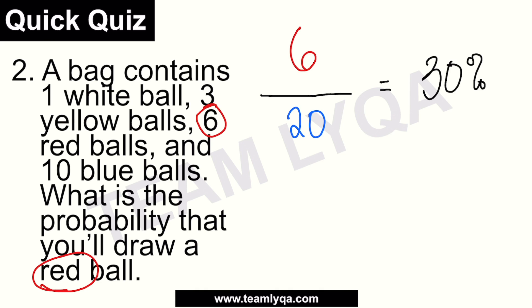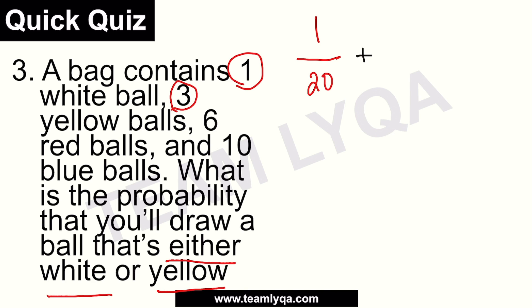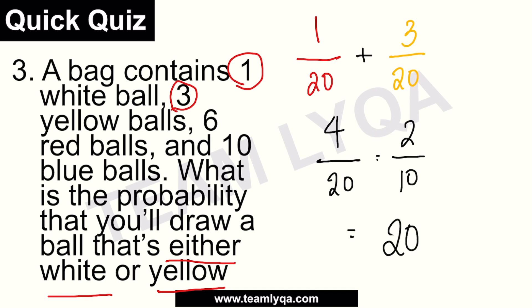Number three, same bag. What is the probability that you'll draw a ball that's either white or yellow? We're okay with white — that's one. We're also okay with yellow — that's three. So it's one over twenty plus three over twenty, which gives us four over twenty. Simplifying: two over ten, which is twenty percent. So you have a twenty percent chance of drawing a white or yellow ball.